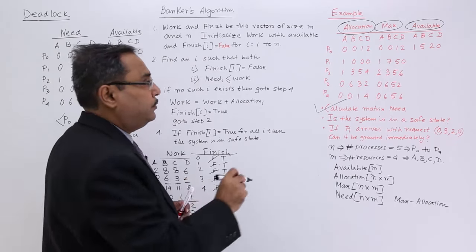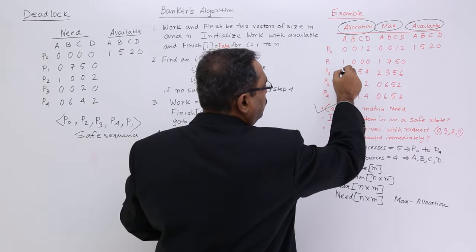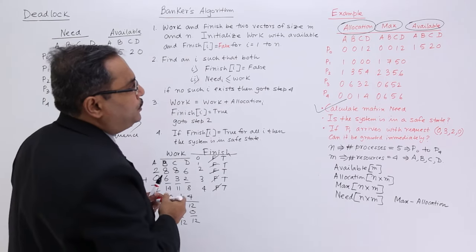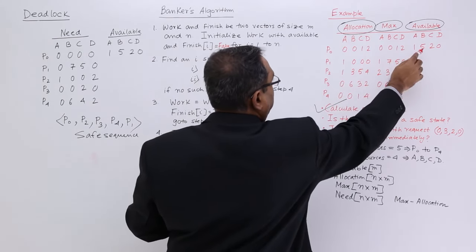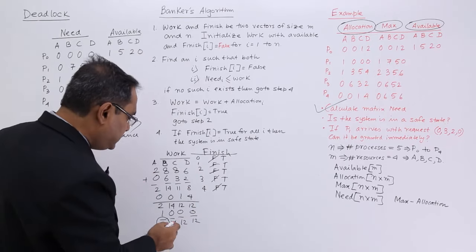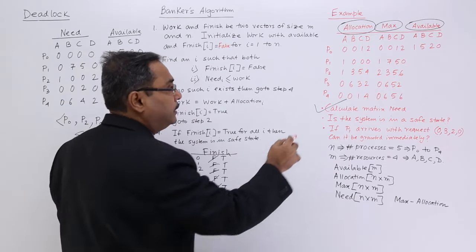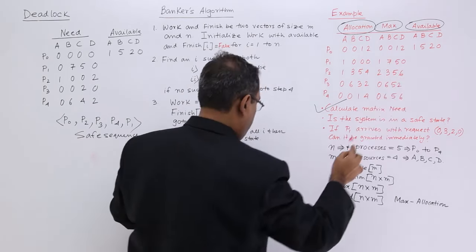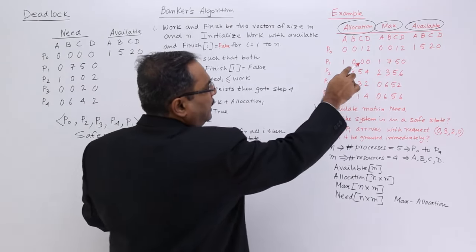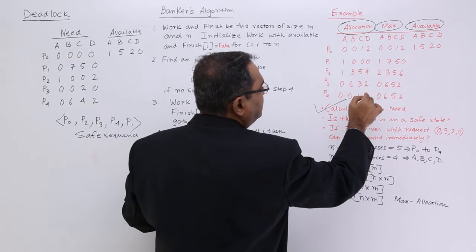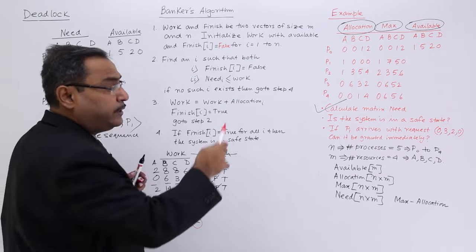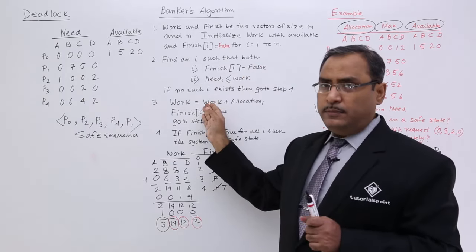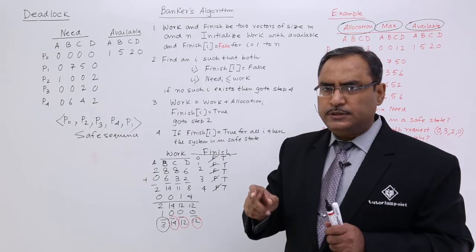You can have other sequences also; it is not mandatory to have a single sequence. Now I am not finding any i where finish[i] equals false because all finish have become true. If finish[i] is true for all i, then the system is in the safe state. You can do a cross-check by verifying column totals of allocated plus available match up. This is the Banker's algorithm — a very common numerical problem in exams. Please solve them and get yourself acquainted with this logic.